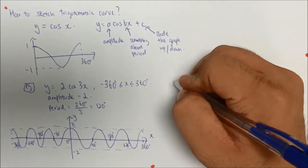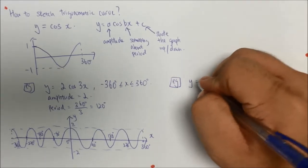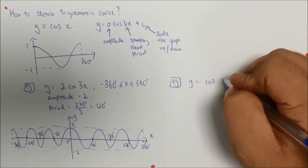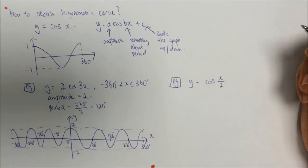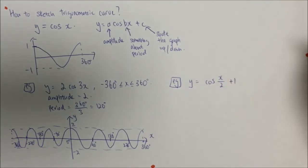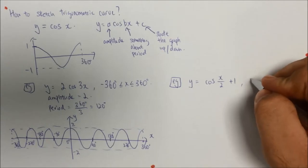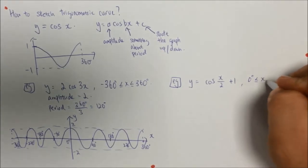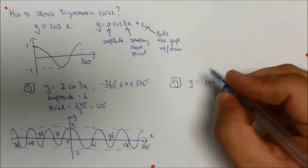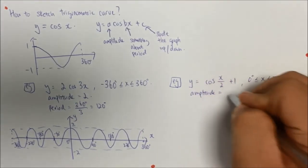So let's do another example. Let's say I have y equals cosine x over 2, and now I plus 1. So now in this case I want my range to be 0 degrees all the way to 720 degrees. Now in this case you have to know that your amplitude is equals to 1.